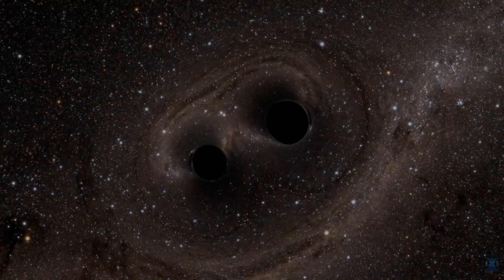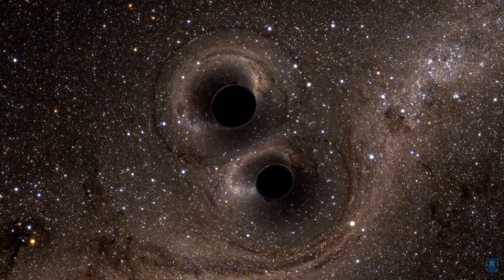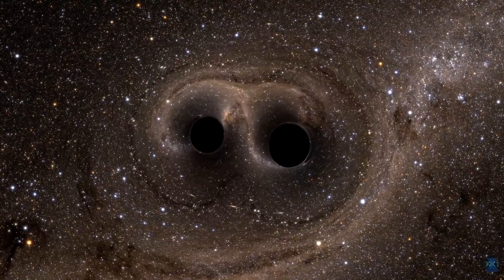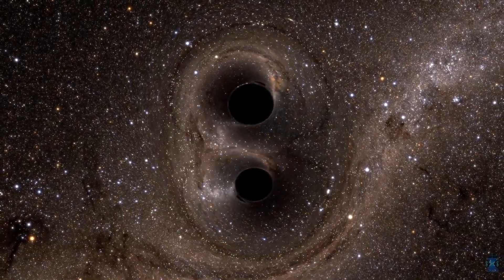The otherwise invisible gravitational waves generated as the massive objects rapidly coalesce cause the visible image to ripple and slosh both inside and outside the Einstein rings even after the black holes have merged.